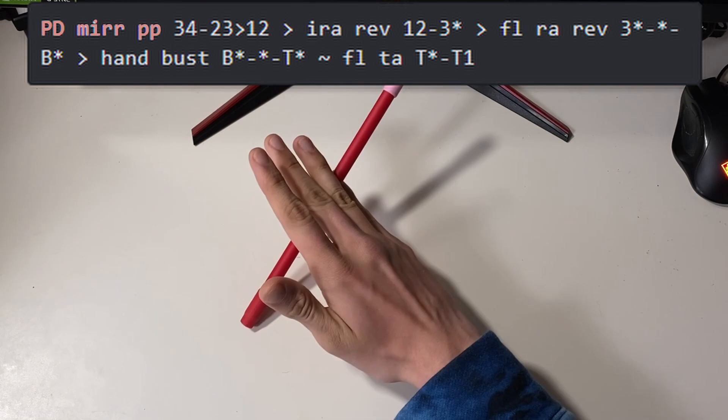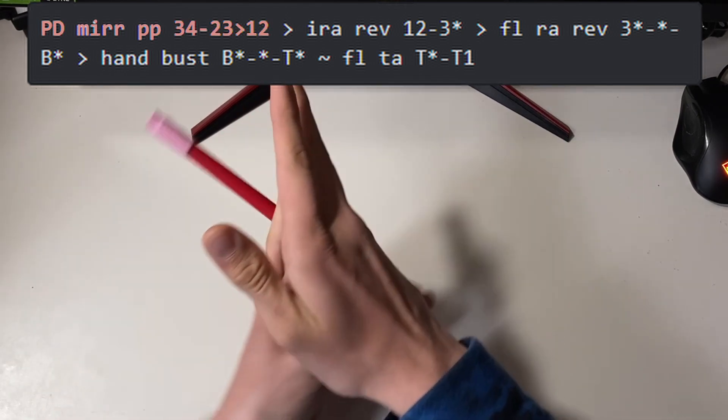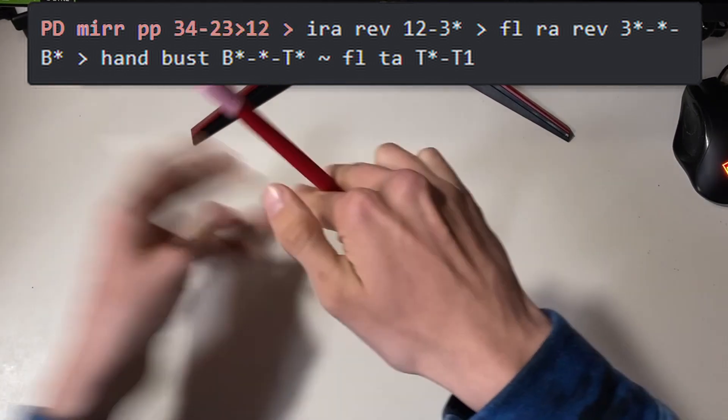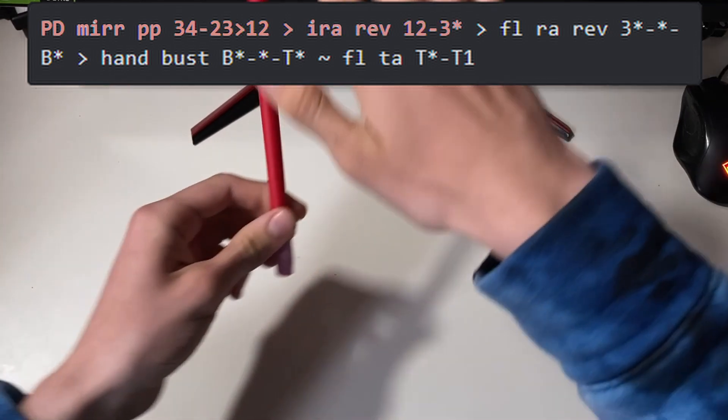We start off with a palm-down mirrored power pass from 3-4 to 2-3 to 1-2. Then there's an index around reverse from 1-2 to 3-star.